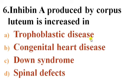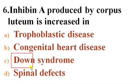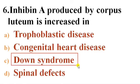Next question: Inhibin A produced by the corpus luteum is increased in — Options: A) Trophoblastic disease, B) Congenital heart disease, C) Down syndrome, D) Spinal defects. Answer is C — Down syndrome. The Inhibin A produced by the corpus luteum is increased in Down syndrome.